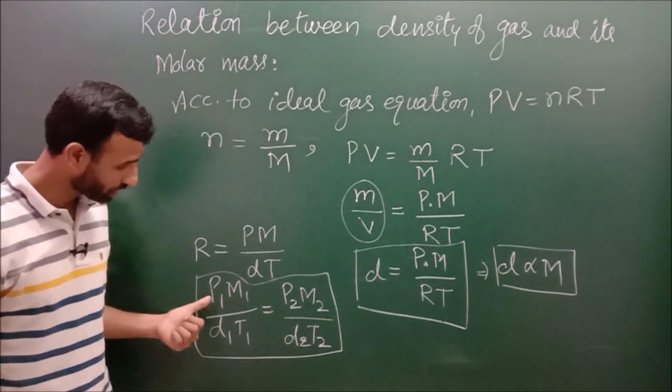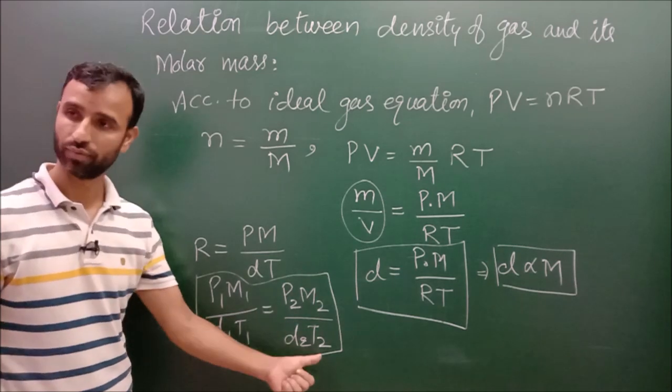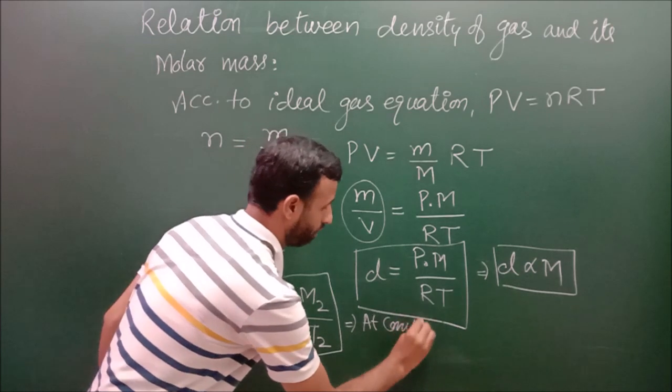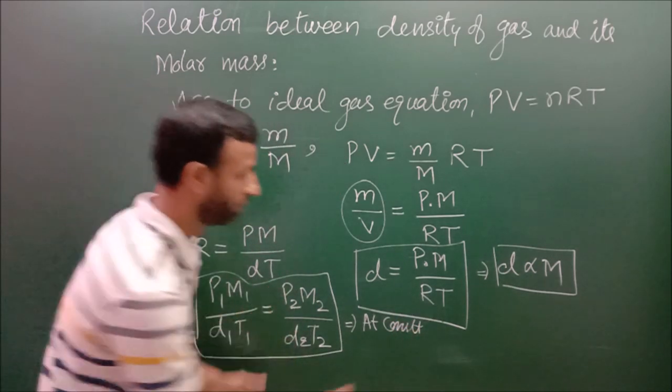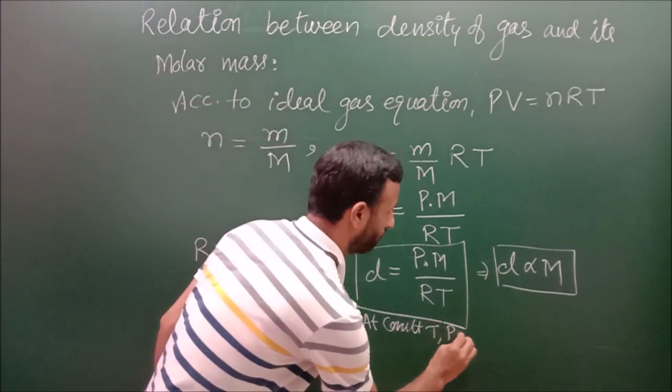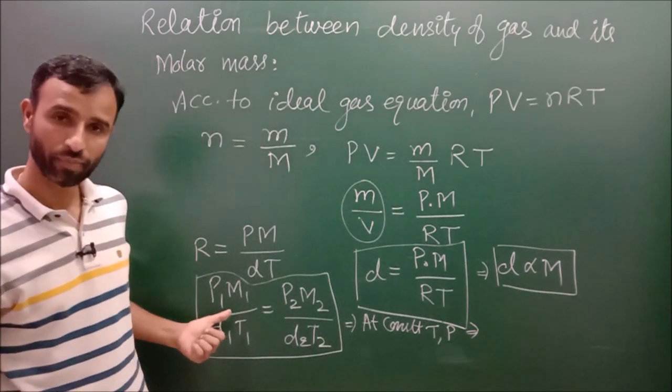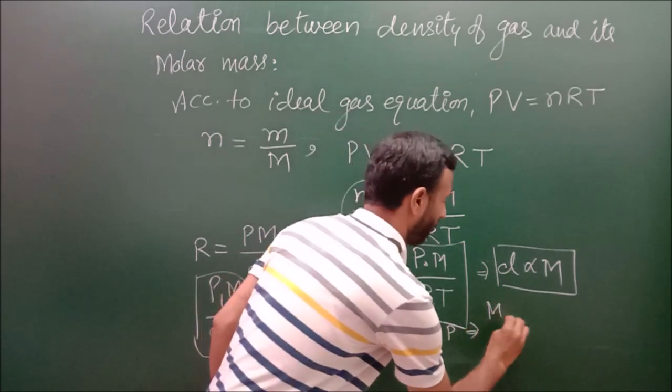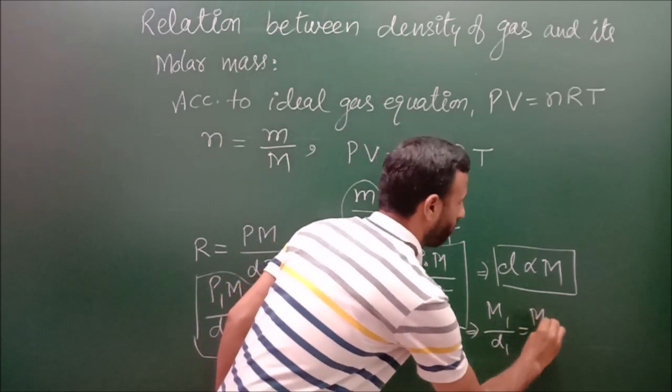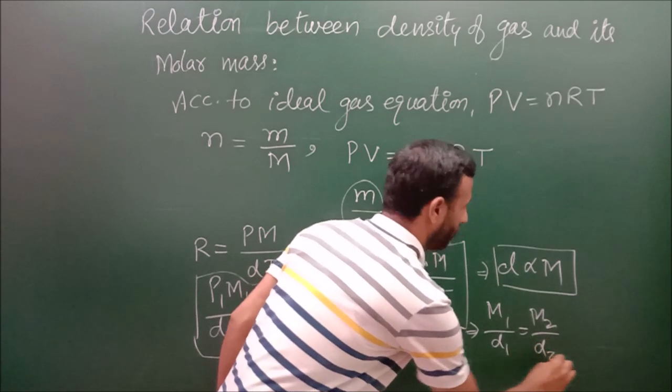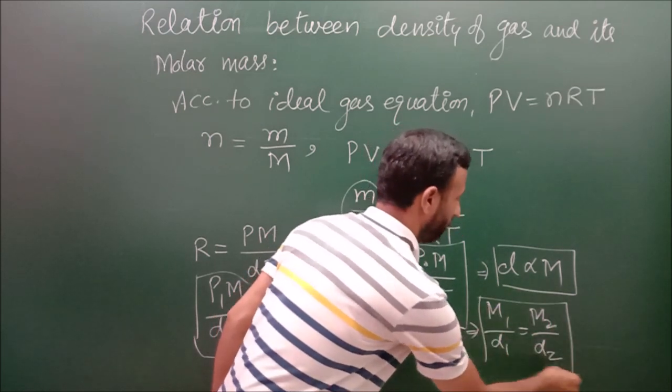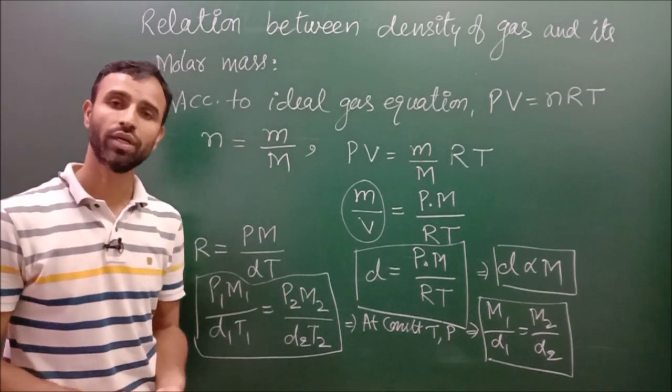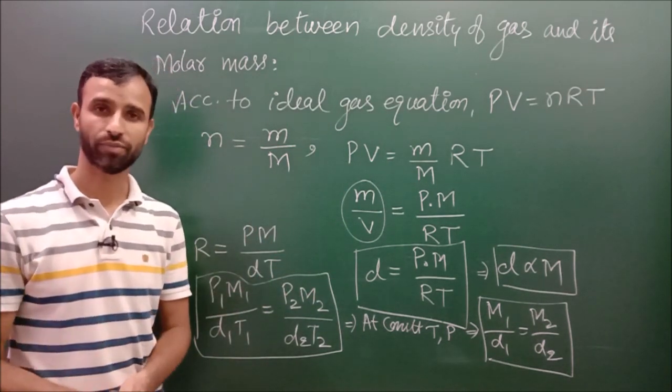So in this way we get the relation. For example, if pressure and temperature are constant, means at constant temperature and pressure, what is the relation? M1 over D1 is equal to M2 over D2. So in this way we can solve the numericals related to density.